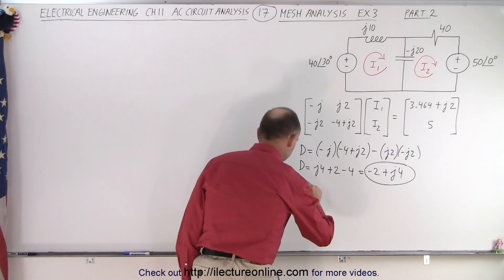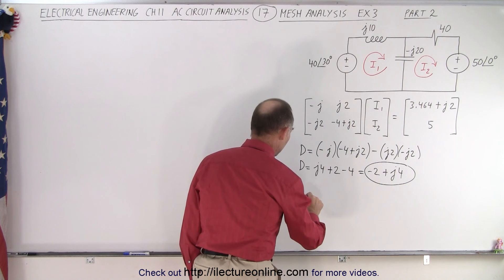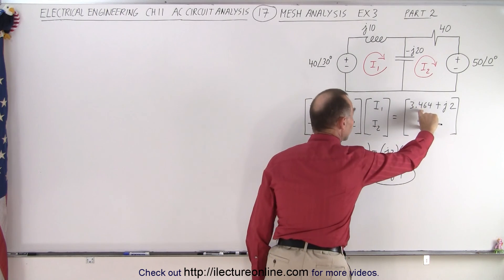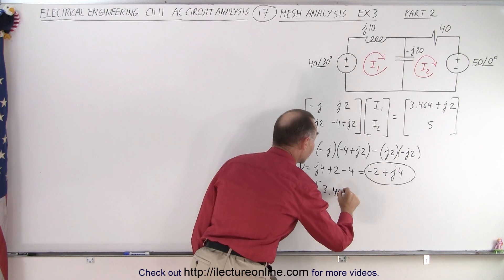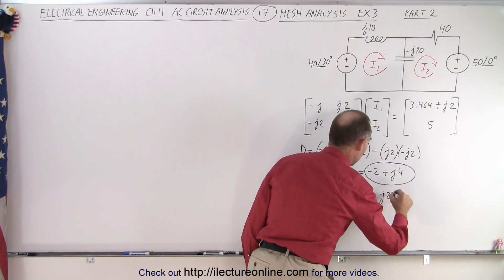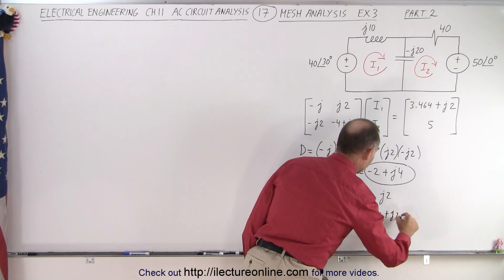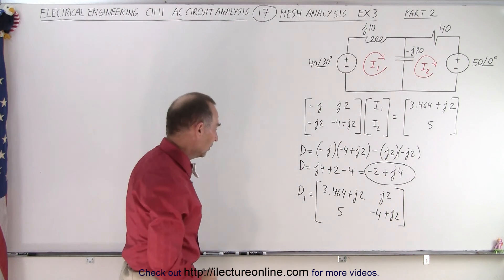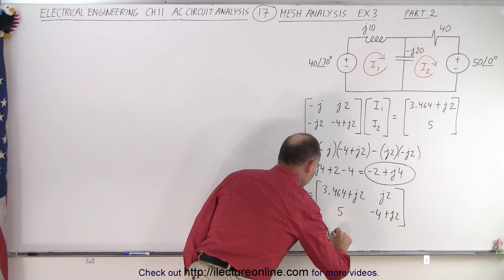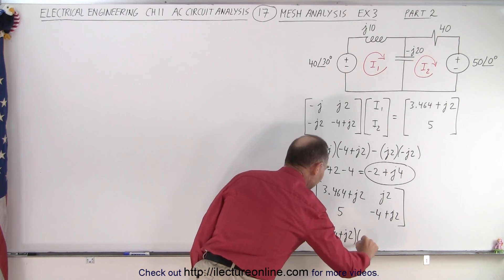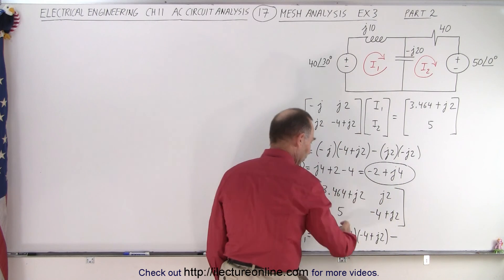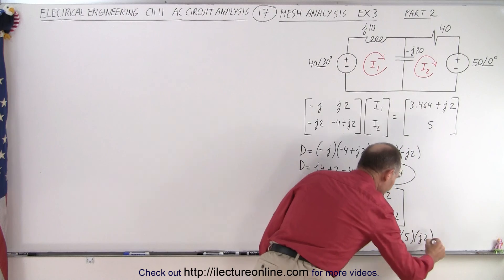So now we need to find D1. D1, how do we find that? So D1 is equal to the determinant when we replace the first column by the values over here. So that would be equal to 3.464 plus J2. Here we get 5, and then we keep this column, which is J2, and minus 4 plus J2. Alright, so D1 is equal to the product of those two, so that gives us 3.464 plus J2 times the product times this, which is minus 4 plus J2. And now subtract from that the product of those two, which would be 5 times J2.